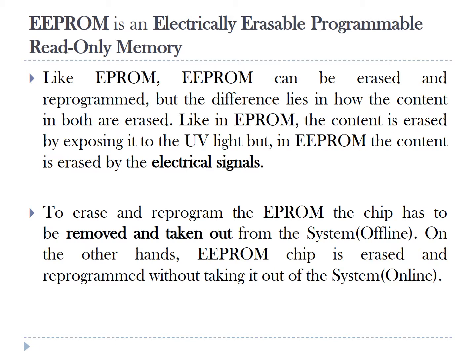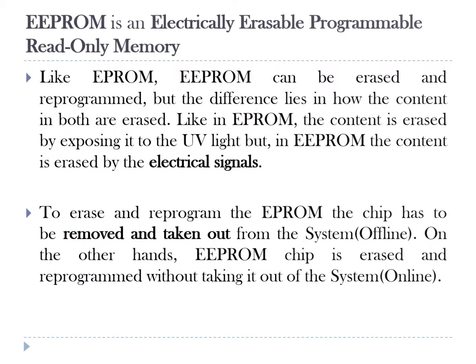To erase and reprogram the EPROM, the chip has to be removed and taken out from the system where it is installed — that is known as offline programming. On the other hand, the EEPROM chip is erased and reprogrammed without taking it out of the system, which is online programming.